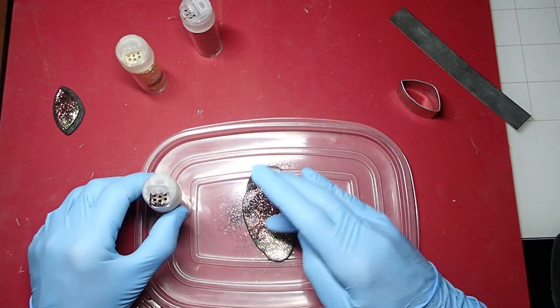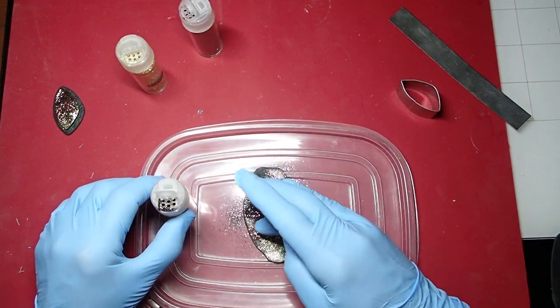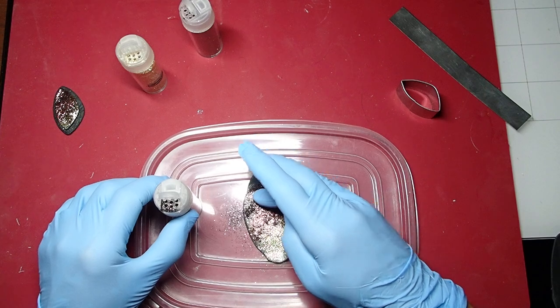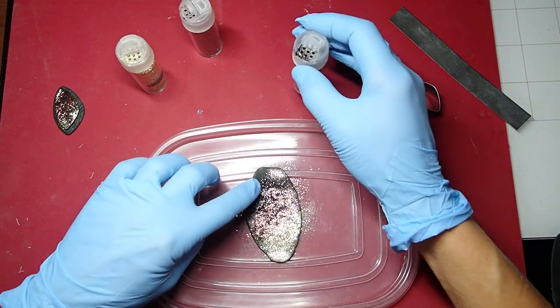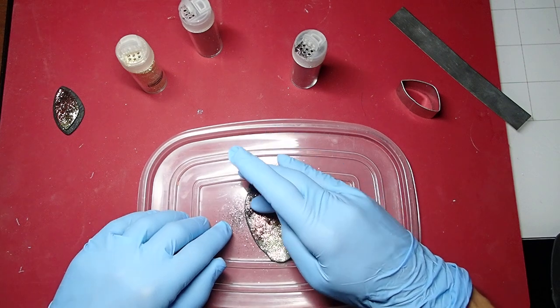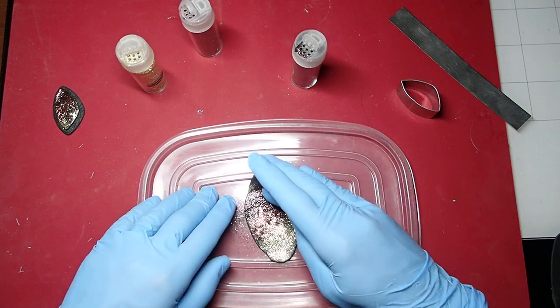Now just tap those in and make sure that you don't have the lines. You kind of want to see the colors blended. You're putting way too much glitter at this point, but that's okay.